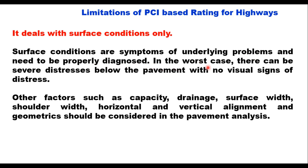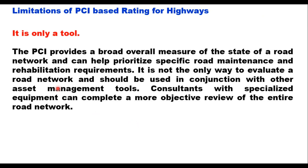Second, PCI deals with surface conditions only. Surface conditions are symptoms of underlying problems, and in the worst case there can be severe distresses below the pavement with no visual signs. Other testing methods like profilometer or network survey vehicle can better quantify pavement condition, and factors such as capacity, drainage, surface width, shoulder width, and vertical alignment should also be considered. Third, PCI is only a tool — it provides a broad overall measure and should be used in conjunction with other asset management tools.